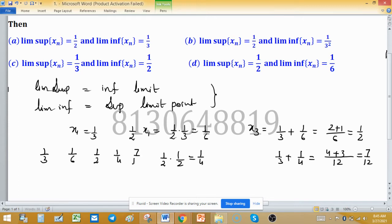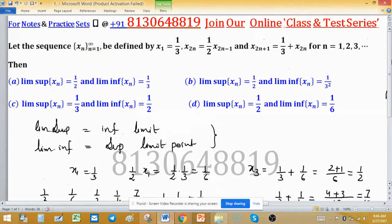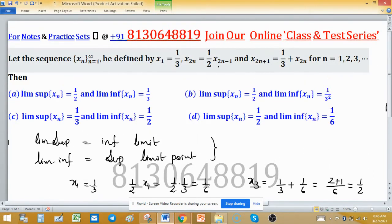1 upon 4, 7 by 12. So you can identify this sequence is not monotonically increasing or decreasing, but this sequence is bounded. All terms are positive, so you can say 0 is lower bound, and odd terms are bounded by half, and this is coming from previous one.